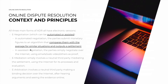In assisted negotiation, the parties simply negotiate over the internet using emails, web video, or others as proof of the communication. In terms of mediation, electronic mediation involves a neutral third party mediating the settlement, but using the internet for its processes and evaluation. Electronic arbitration involves a third party making a binding decision over the internet, after hearing arguments and seeing evidence online, with document submissions, streaming video, teleconferencing, or others.